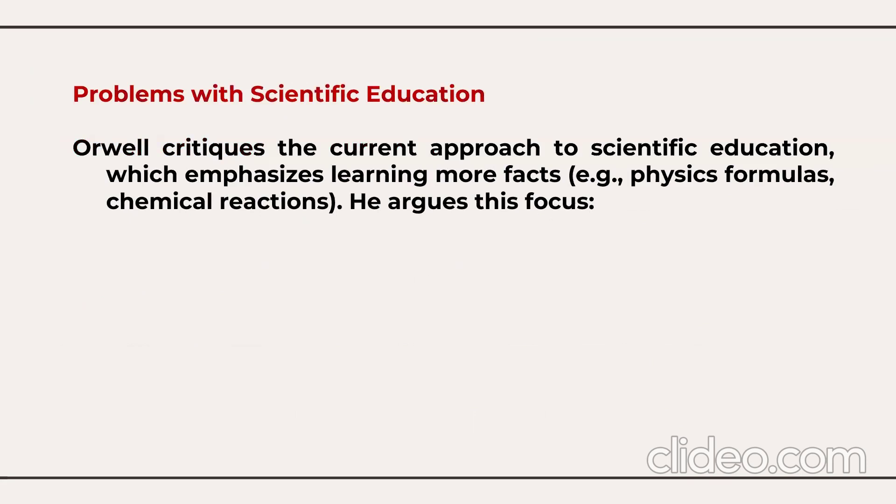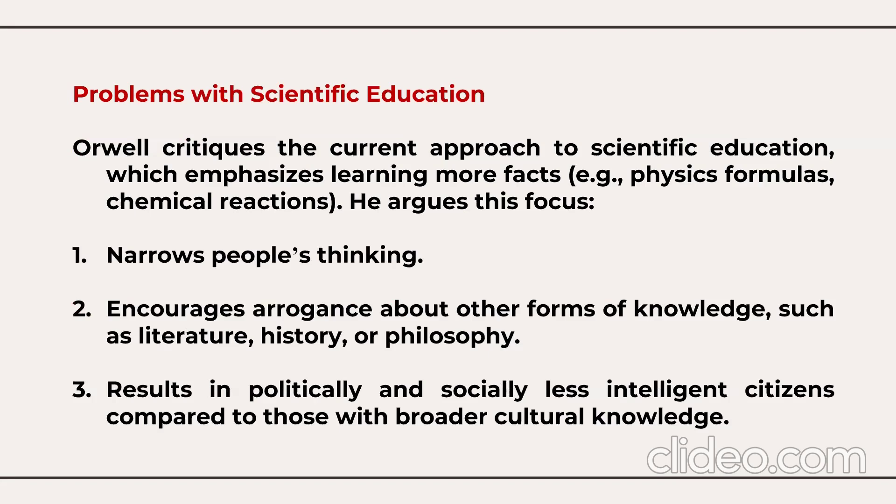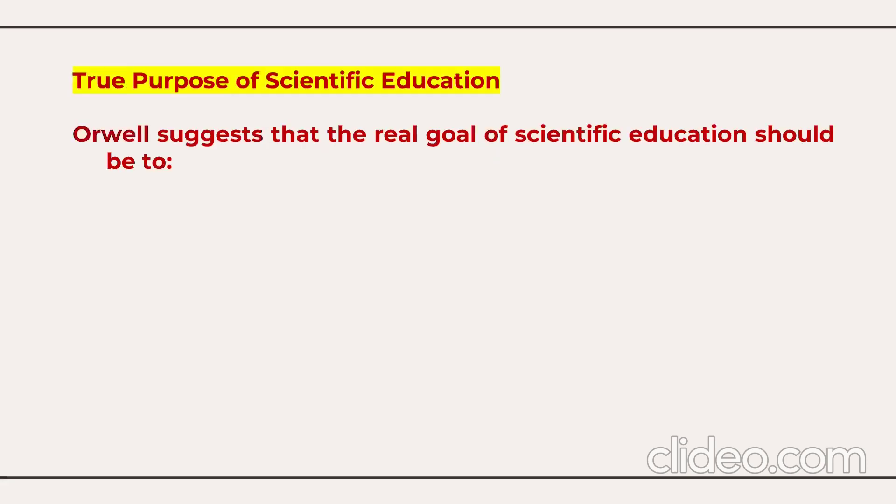George Orwell critiques the current approach to scientific education, which emphasizes learning more facts like physics formulas and chemical reactions. He argues that this focus narrows people's thinking, encourages arrogance about other forms of knowledge like literature, history, and philosophy, and results in politically and socially less intelligent citizens compared to those with broader cultural knowledge. These are the problems with scientific education according to George Orwell.